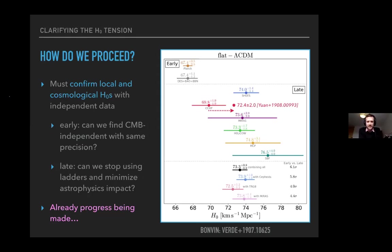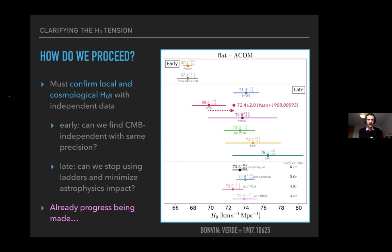We're stuck — neither explanation is crying out as correct. The only real orthogonal way to proceed is to use new data. We want completely independent data to get an independent local value for the Hubble constant, and an independent cosmological inference — ideally with completely different systematics. We want something from the early universe totally independent of the CMB with the same precision, and on the late-universe side, a ladder-free estimate with much lower astrophysical assumptions.